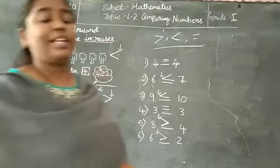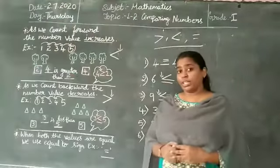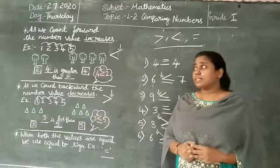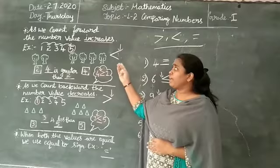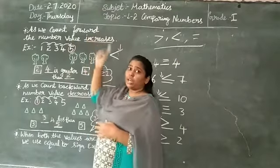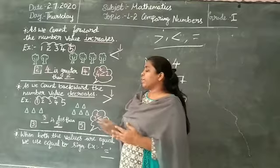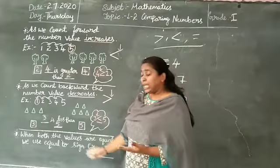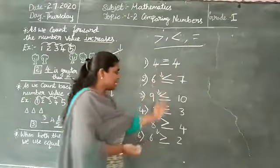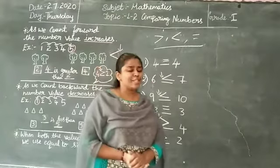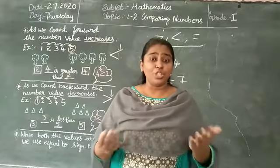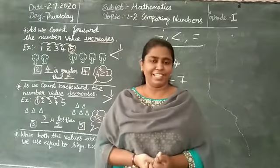So let's summarize what we discussed in today's session. We discussed how to find the value when we come forward, and how to find the value when we come backward, and equal to. We also learned how to use symbols by doing some problems. Thank you so much, children. We will meet in the next class with a new topic. Till then, take care.